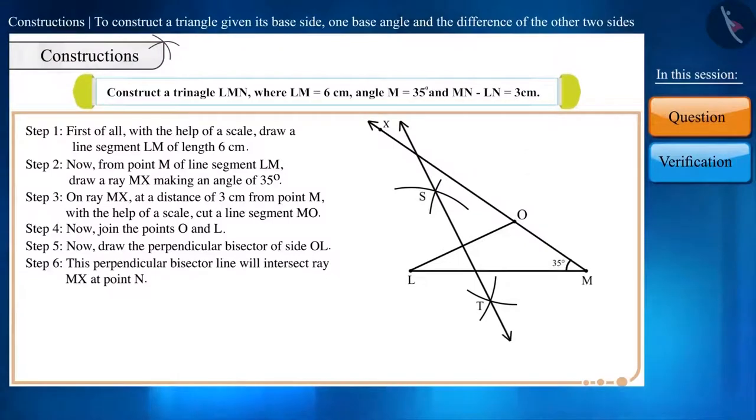Step 6. This perpendicular bisector line will intersect ray MX at point N. Step 7. Now join the points N and L.